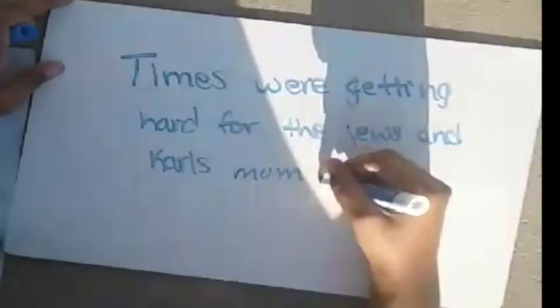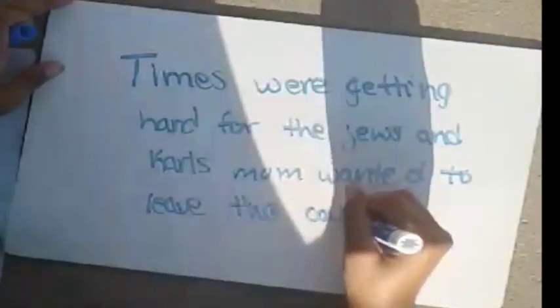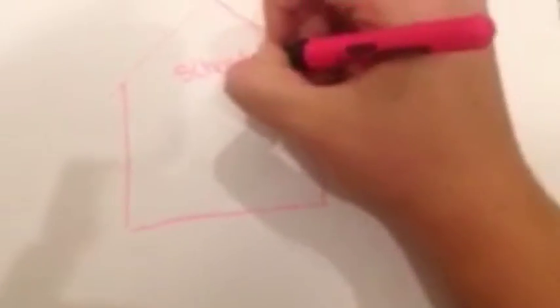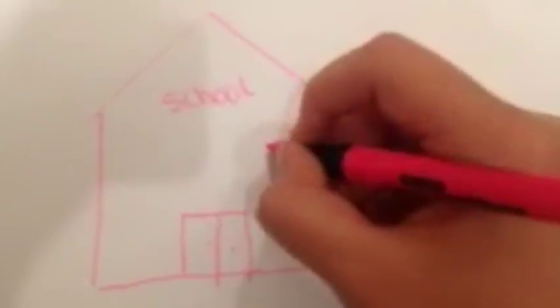Things are getting a lot harder for the Sterns and the Jewish population all around Germany. When Karl returns to school, he notices many changes. All of the faculty at the school that are not Nazi supporters have been fired.